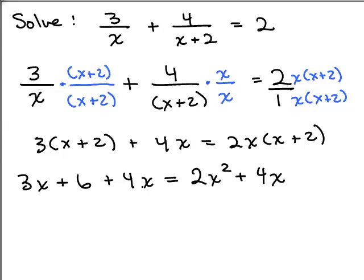So what do we have here? Do you notice you have a plus 4x on both sides? So basically when I subtract 4x from both sides, that's not going to be there anymore. What I've got here is a quadratic equation. 3x plus 6 equals 2x squared. So to solve a quadratic equation, you set it equal to 0.